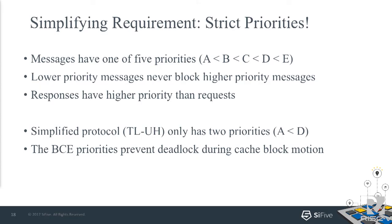Another simplifying requirement is those five message priorities are strictly ascending. If you have sent a B message, you're legitimately able to block A traffic or other B traffic until you get your answer. That can simplify the hardware a lot because the way the protocol's set up, you know how to slow things down safely. Lower priority messages never block higher priority messages. Responses always have strictly ascending priority relative to requests. The simplified protocol only has two priorities, and the last three priorities are only needed for cache block motion.